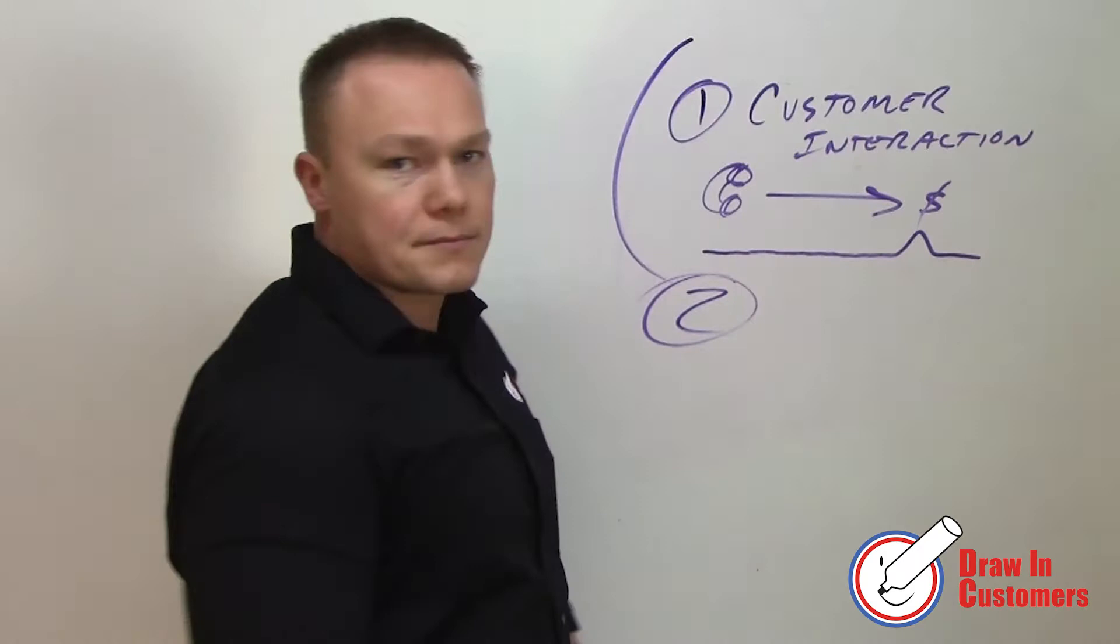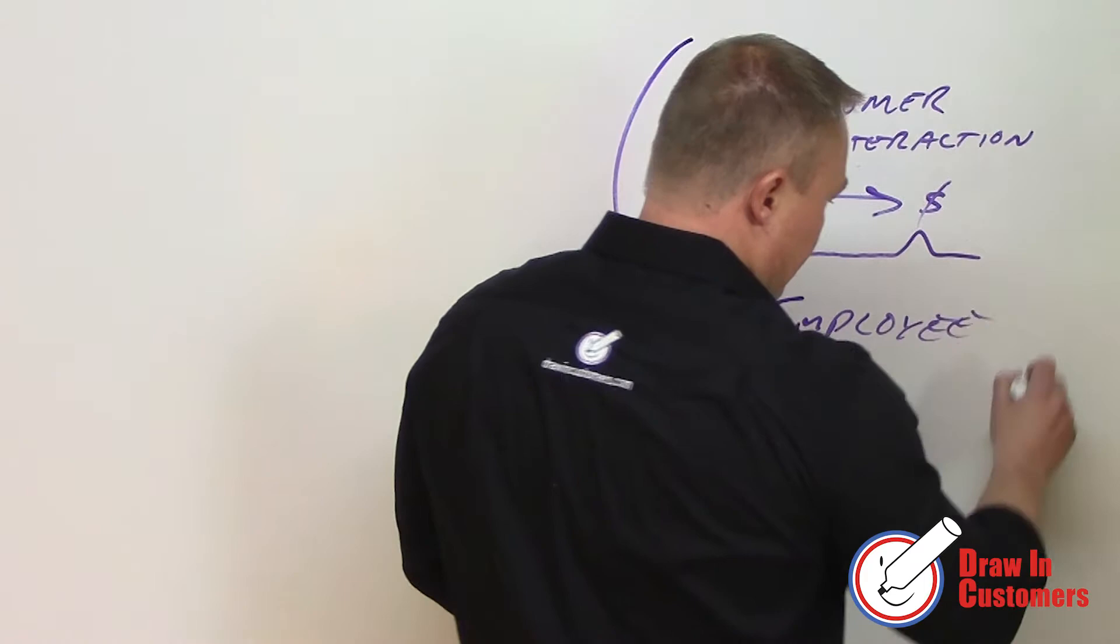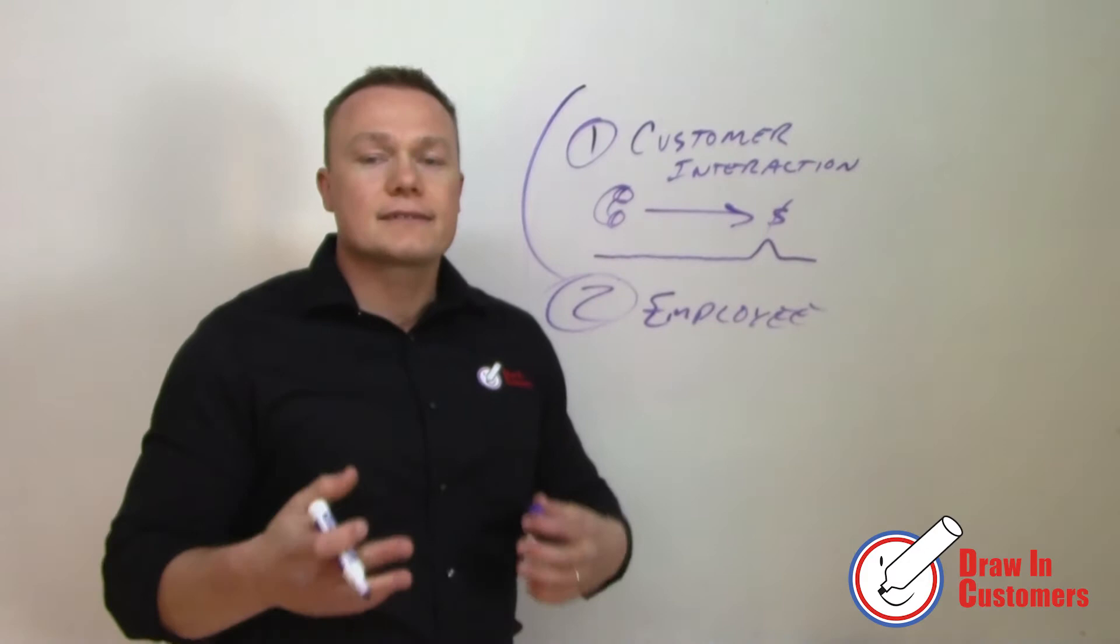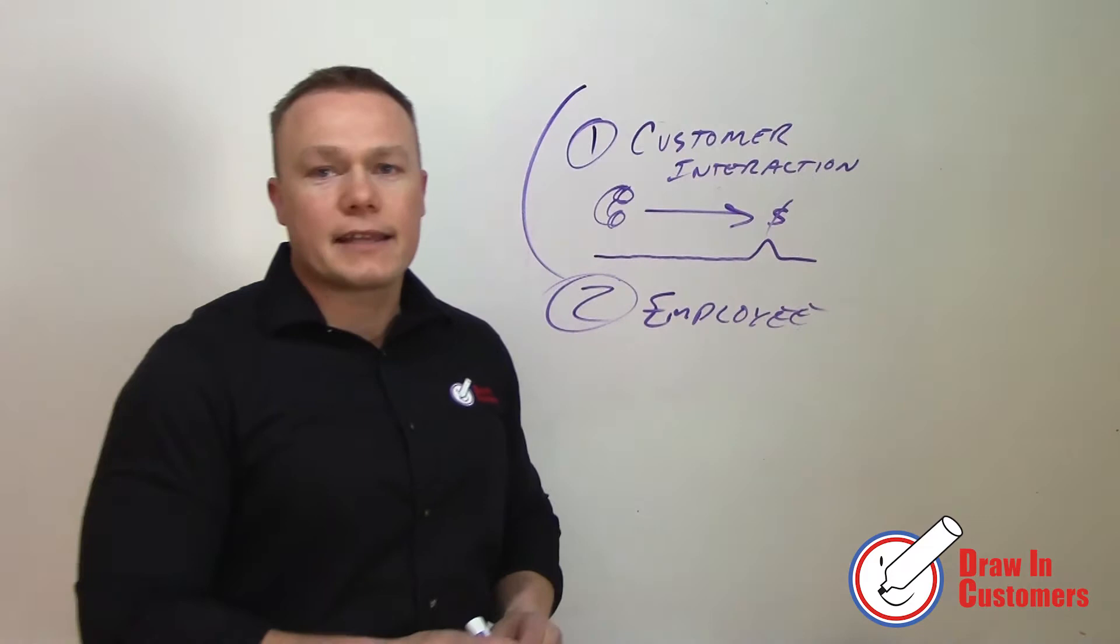System two is employee. Employee systems are a huge game. You've got things like attitude and well-being, correspondence, communication with them. You want to check and see how that's doing.